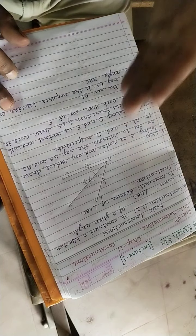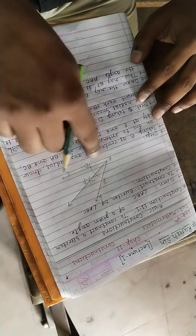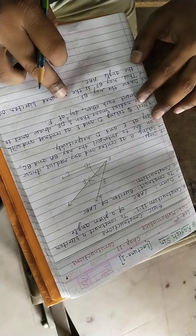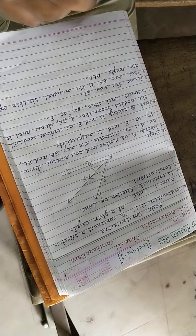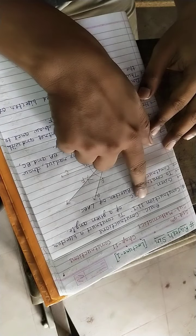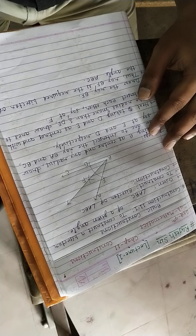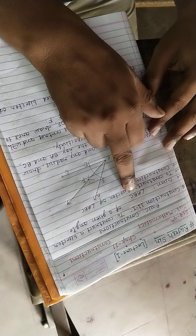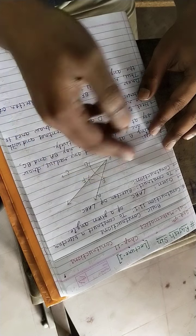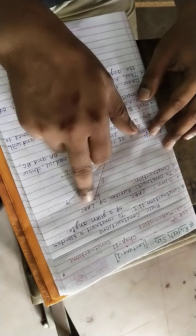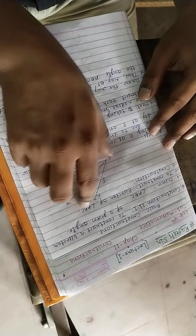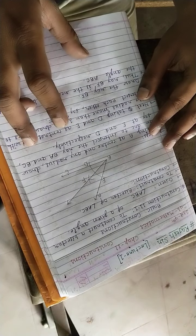So you have seen very simply the bisector of a given angle we can draw using these steps. In exam if it is asked, you have to write this way. Of the construction, you have to read carefully. Given things you have to write in given, and whatever you want to construct. Then construction - the figure we have to show here, how we are constructing.